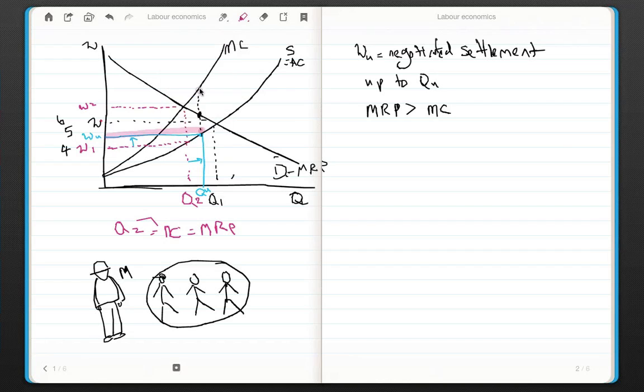So, if the company wants to hire more people above QU, it's going to have to offer a higher wage rate. Now, this wage rate is then enacted for everybody. And that's the key thing as to why the supply curve jumps. So, let's say up to QU, we're hiring at, let's say, £5 an hour.